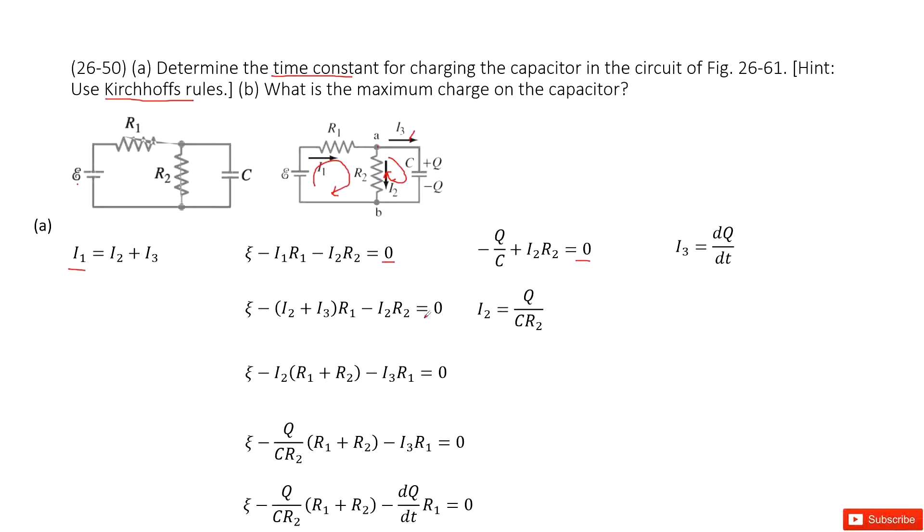Now we can simplify it. We input the I1, replace I1 as I2 plus I3. So this function look like this one. And then from this one, we can convert it to get I2 equal to Q divided by C times R2.